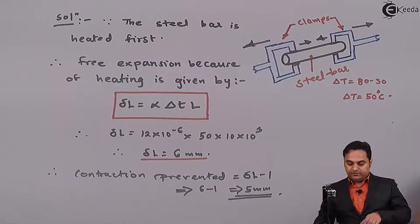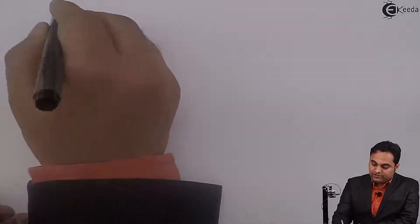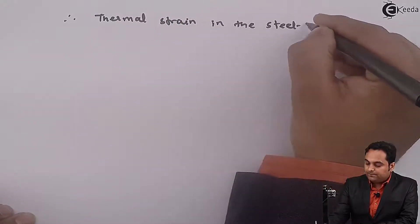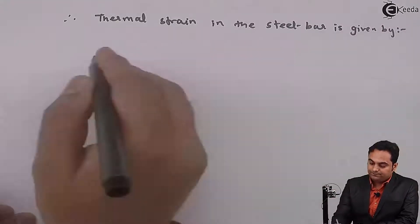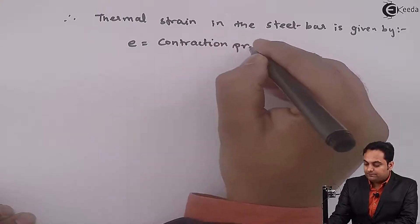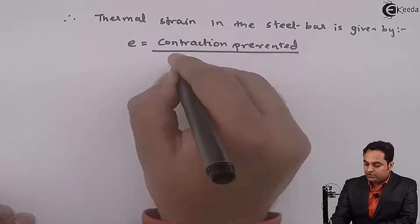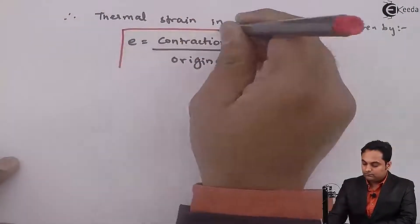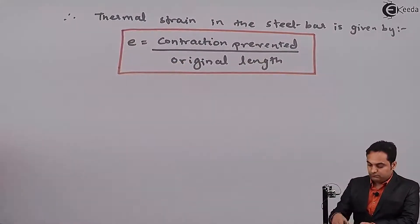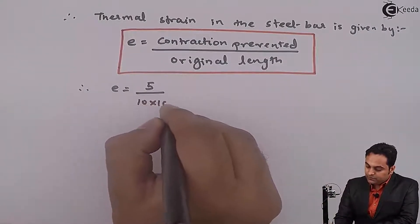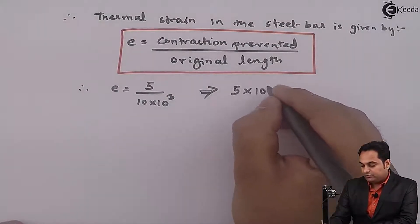After getting the contraction prevented we can calculate the thermal strain, and here the thermal strain developed will be tensile in nature. Therefore thermal strain in the steel bar is given by contraction prevented divided by the original length. The contraction prevented is 5 and the original length is 10 into 10 raised to 3. So the thermal strain is 5 into 10 raised to minus 4.